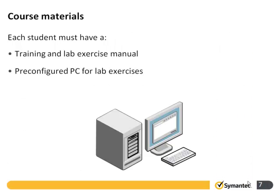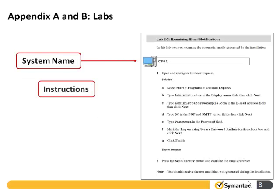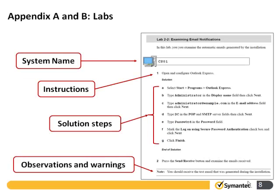For the course materials, each student will have a manual and also a lab system that will be pre-configured for them. This slide gives you an idea of what the lab manual looks like. Under the system name — CSO1 in this case — it indicates which system you must be working on at the time. Underneath the solution section are the solution steps. It's up to you whether you consider yourself an expert in SEP or a complete beginner, and whether you follow these solution steps or just try the tasks without looking at those.